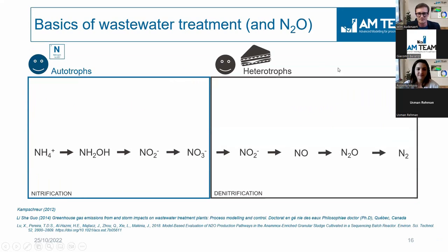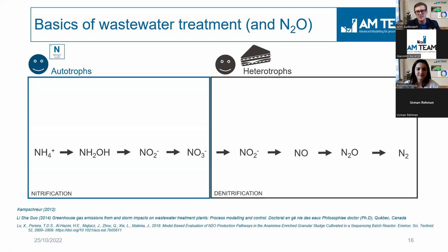Looking at the root causes of N2O production, we consider the basics of wastewater treatment. Most of you know nitrification and denitrification — that is really the core of nitrogen removal. There are two bacteria, the autotrophs and the heterotrophs, that collaborate. This is the same in a conventional system or a biofilm system; the configurations are different, but they collaborate. The autotrophs oxidize ammonia, adding oxygen progressively until nitrates. This is nitrification.